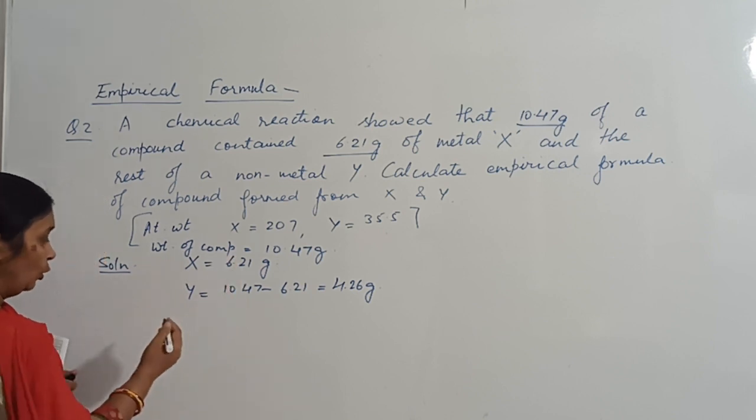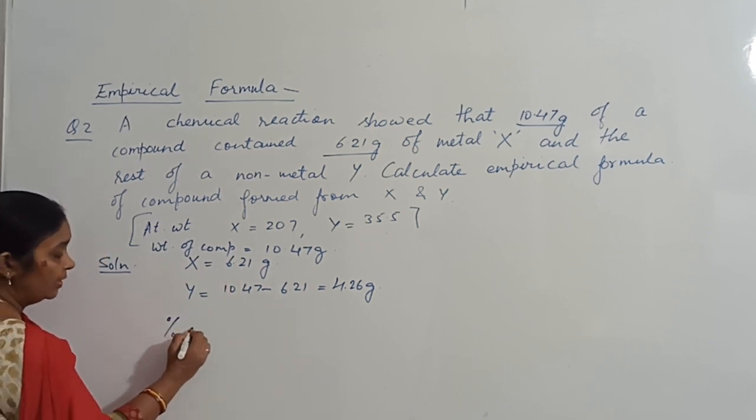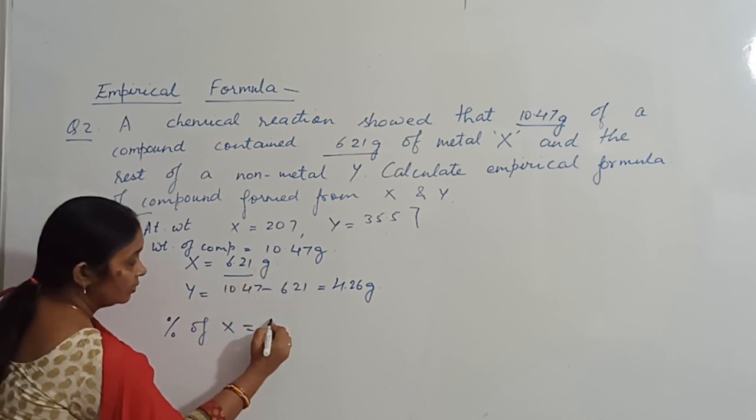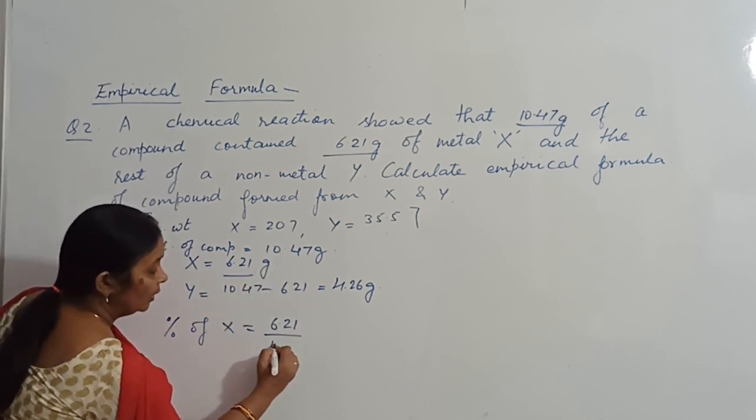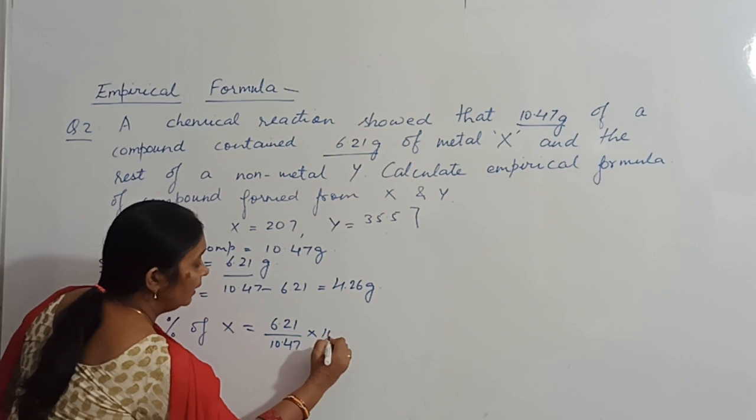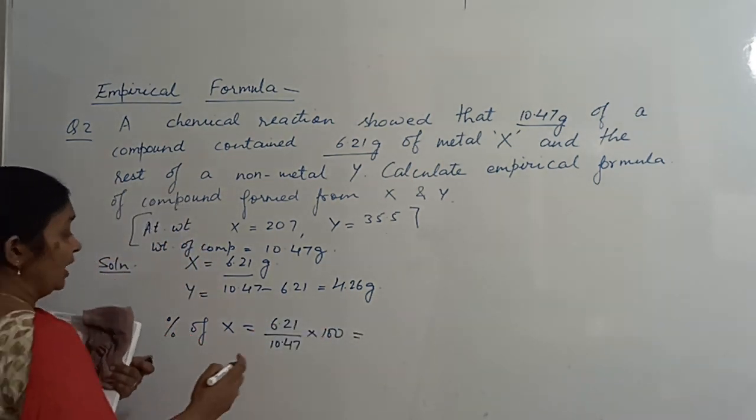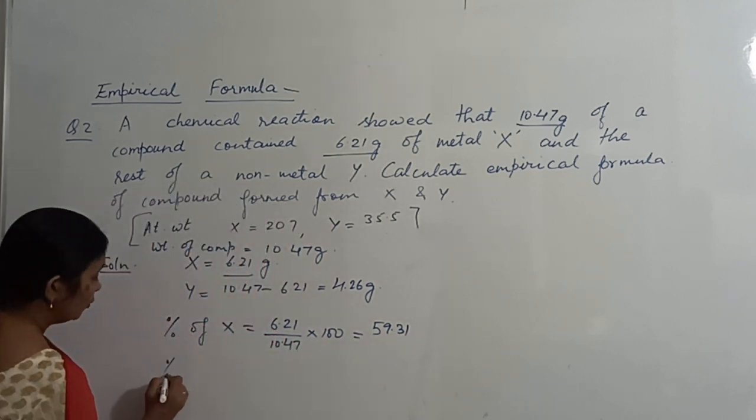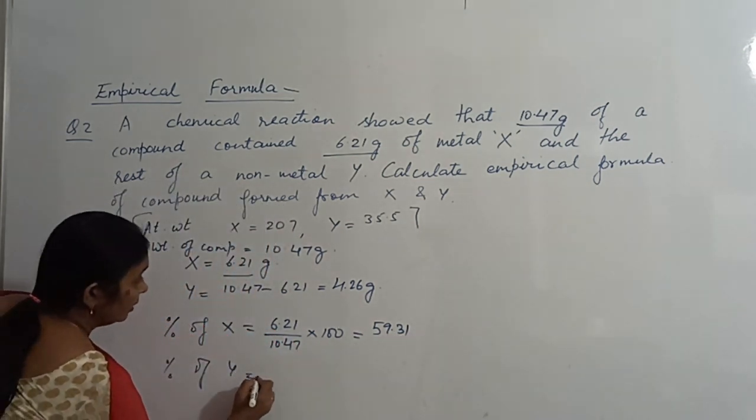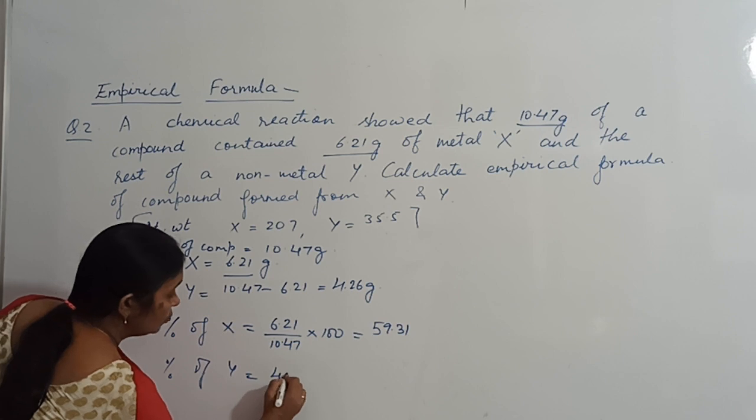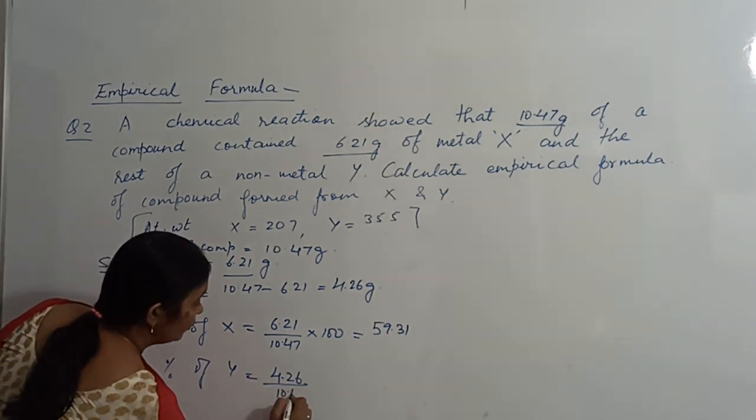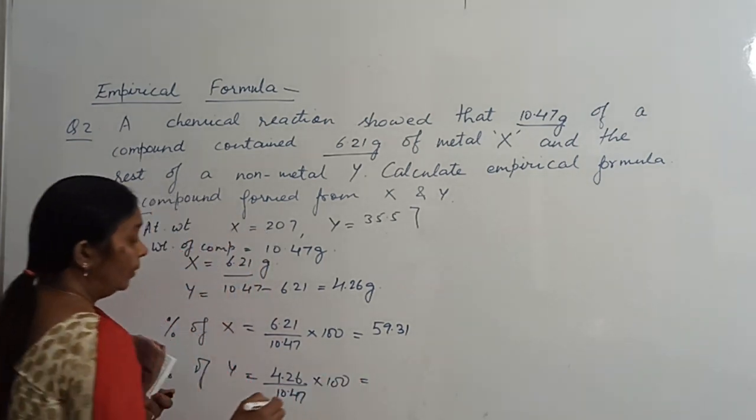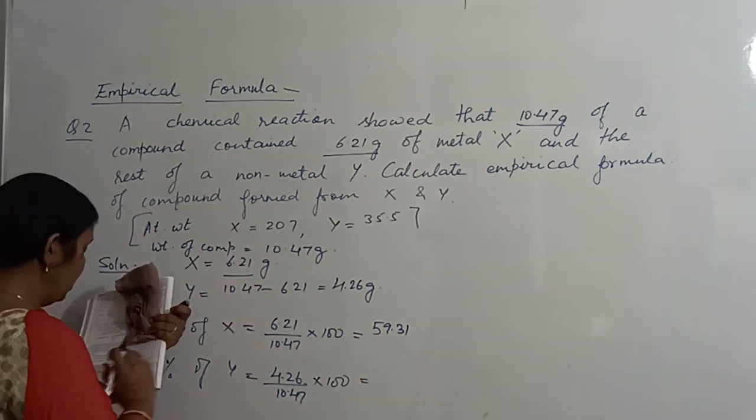One step is increased. How are you going to calculate the percentage of X? Weight of X upon total weight: 6.21 upon 10.47 into 100. This will come to about 59.31. And percentage of Y: this will be equal to 4.26 divided by 10.47 into 100, and this will come to about 40.69.